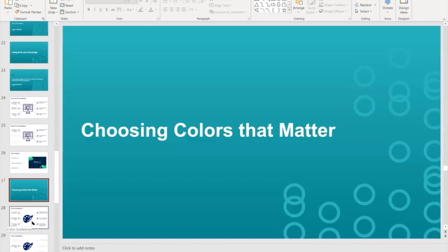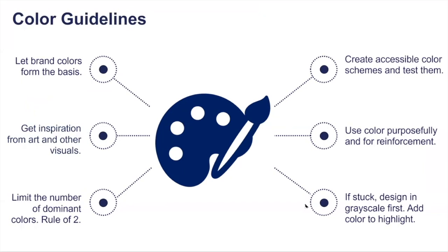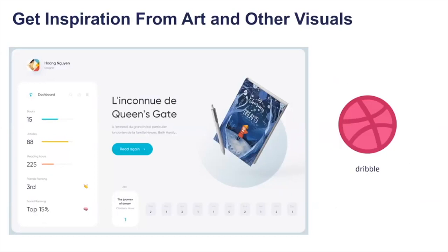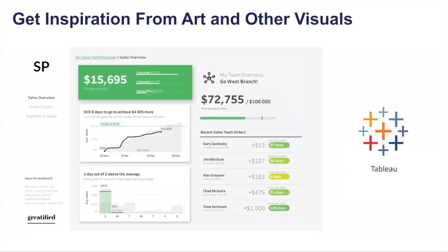For choosing colors that matter, I start by letting brand colors form the basis — here we're using a black and white dashboard, so every color needed to reflect black or white. I also look at inspiration from other visuals and art. Key guidelines: limit dominant colors to two, create accessible color schemes and test them, use color purposefully, and if stuck, design grayscale first then add color to highlight. I get color inspiration from Dribbble and the Tableau community — including a modern dashboard by Ludovic who won the Iron Viz contest a few years ago.